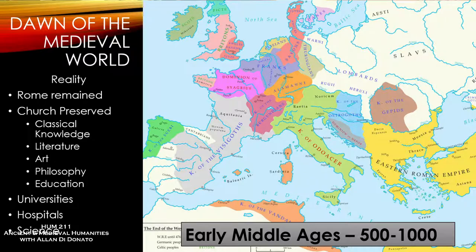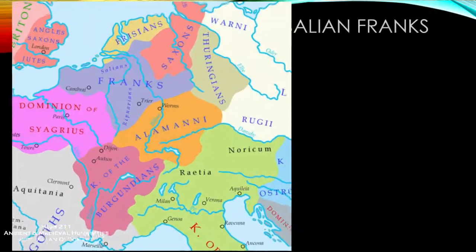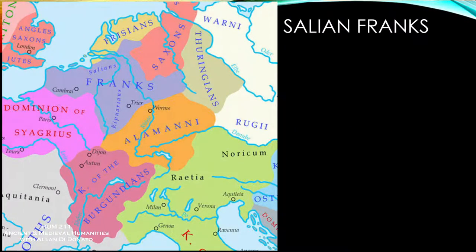As I speak of the Renaissance, this brings me back around to where we're going today — because we're going to talk about an early Renaissance that arose among the Franks themselves, known as the Carolingian Renaissance, a great revival in art, literature, and education. The rise of this Carolingian Empire begins with a group known as the Salian Franks, located right about here in Europe.